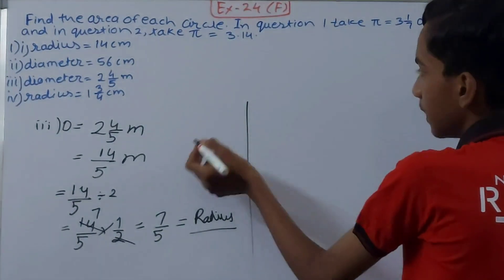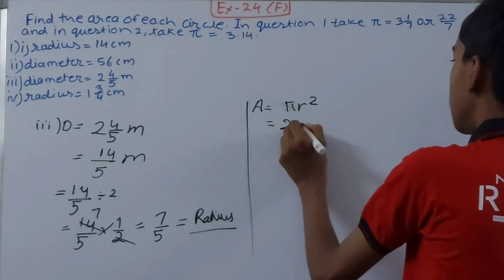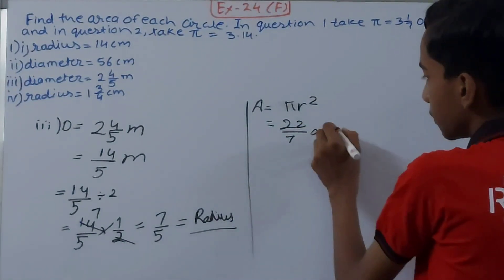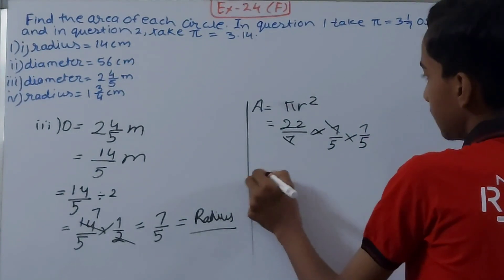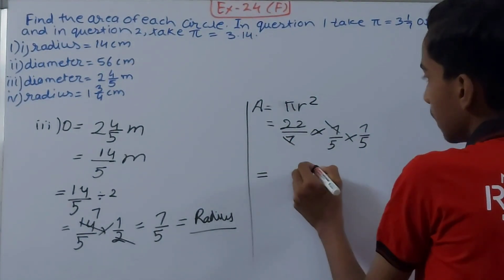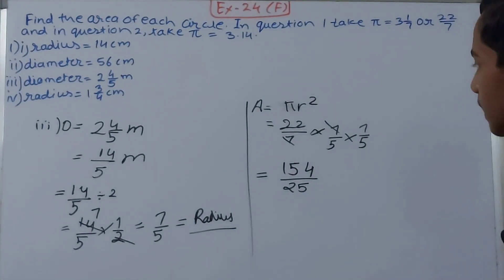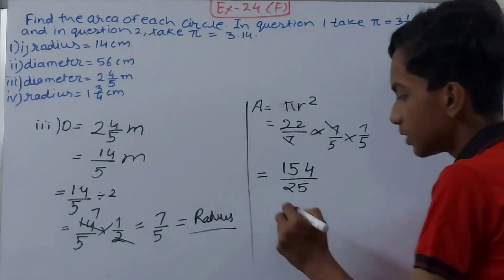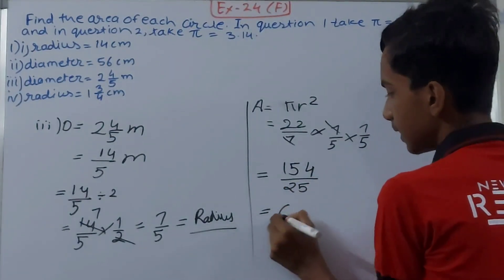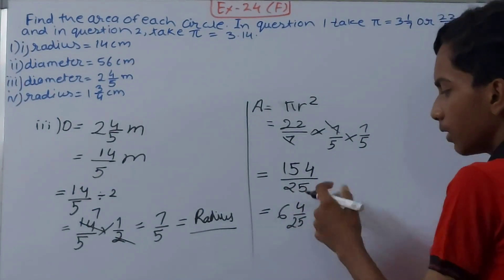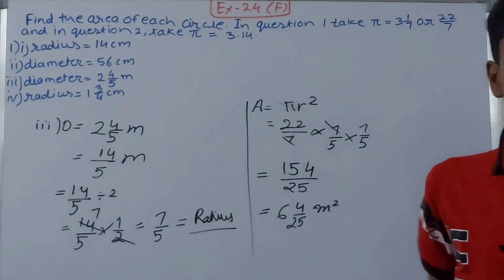Radius we know, and the value of π is 22/7. So area equals to πr², that is 22/7 into radius 7/5 into 7/5. Cancel this. So 7 into 2 is 14, and 1 into 2 is 2, giving us 154/25. This cannot be cancelled, so let's convert this to a mixed fraction. That will give us 6 whole 4/25 m². This becomes the area.